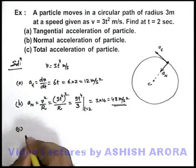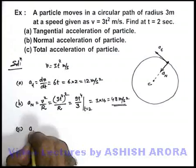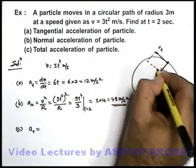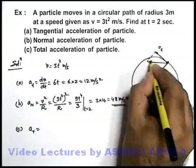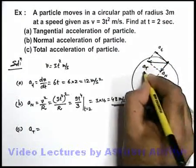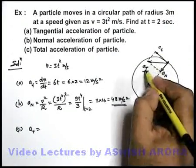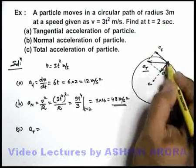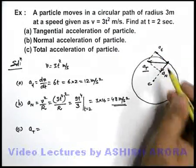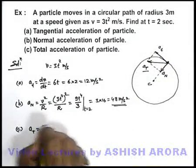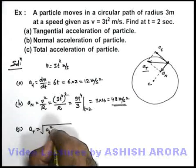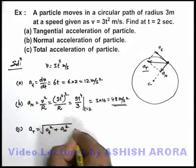In part C, we are required to find the total acceleration. We know total acceleration is the vector sum of normal and tangential acceleration. This total acceleration is the net acceleration of particle, and we can treat tangential and normal acceleration as components of total acceleration along tangent and normal of this particle. So total acceleration is root of a_tangential² plus a_normal².